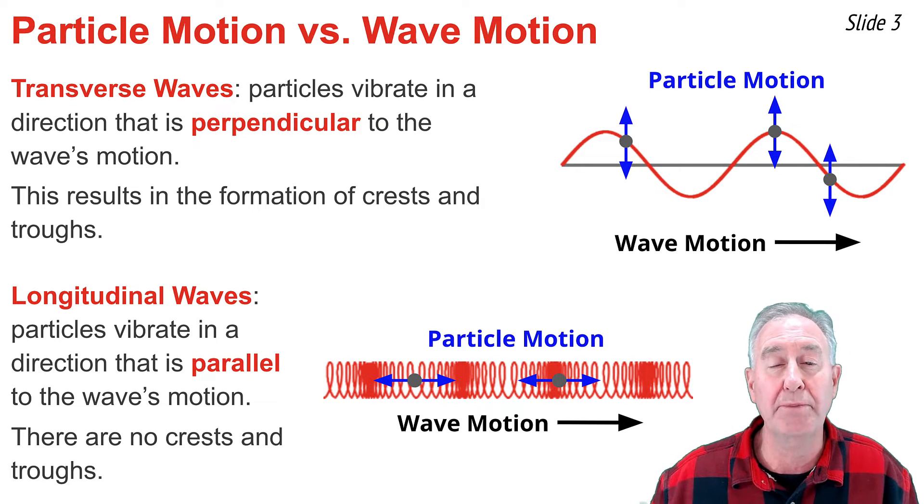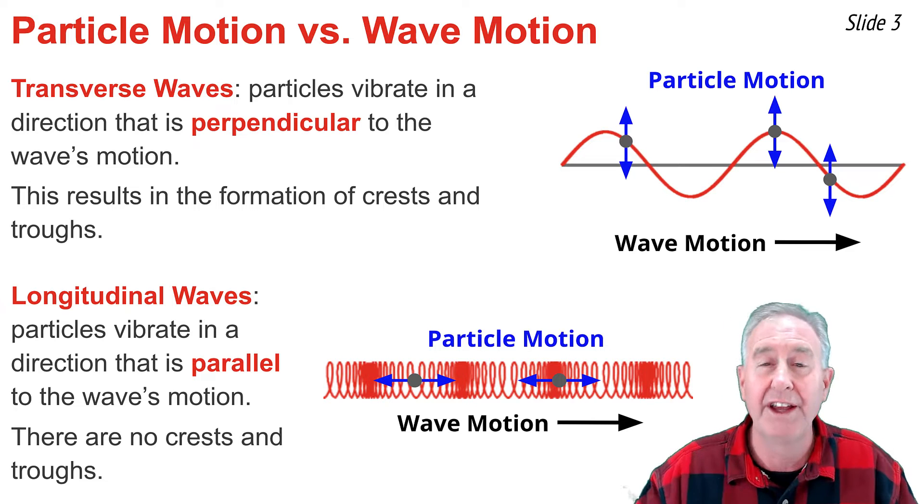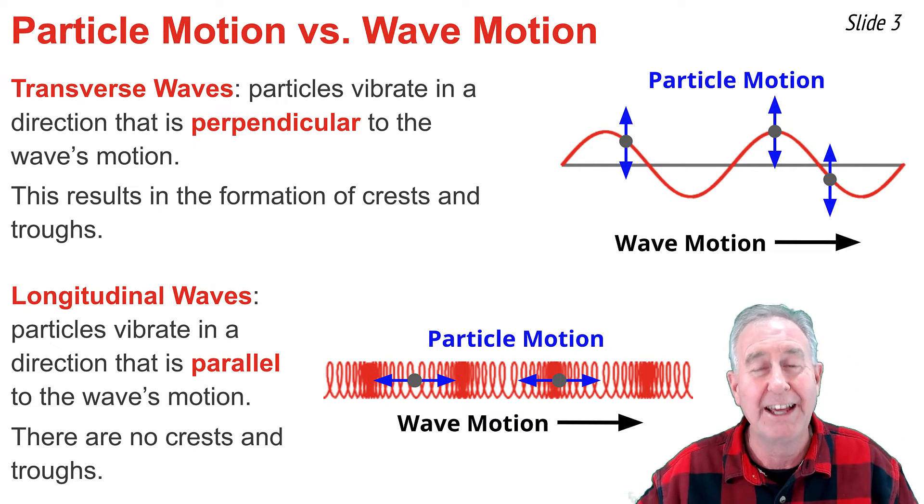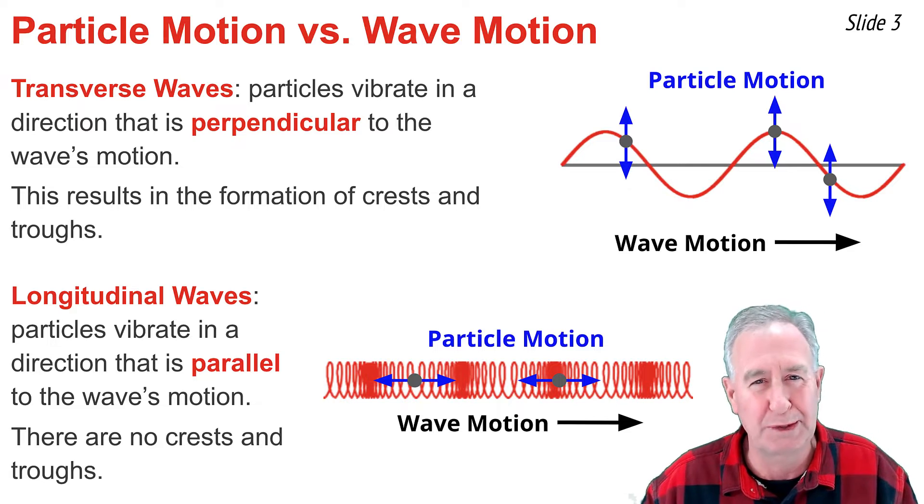we form regions of space within the slinky where the coils are pressed together and other regions where the coils are spread apart. This is known as a longitudinal wave.